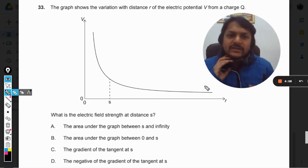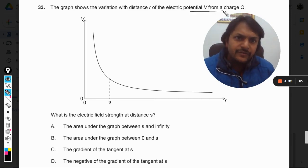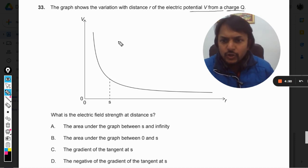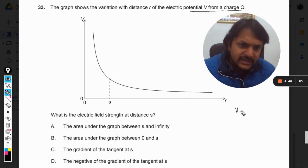Okay dear students, let us see what is there in this question. The graph shows the variation with distance r of the electric potential V from a charge Q, and the graph is shown here. We know that the potential is given by 1 by 4 pi epsilon_0 Q by r. This is the potential due to a point charge at a distance r away from it.